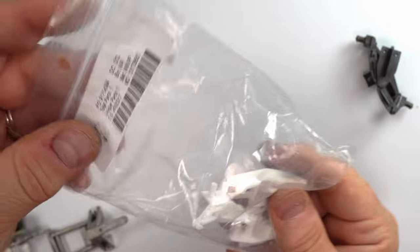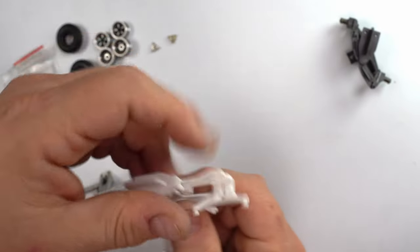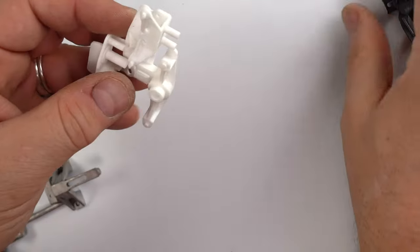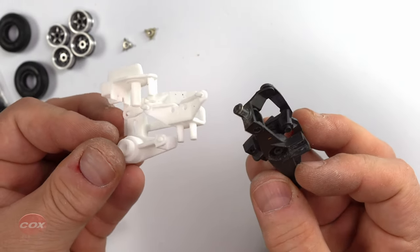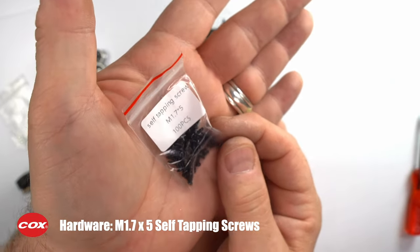These parts are made from the SLS technique, which is selective laser sintering. It's a particular nylon that is very similar to the original material that Cox used for their Ackerman steering kit.